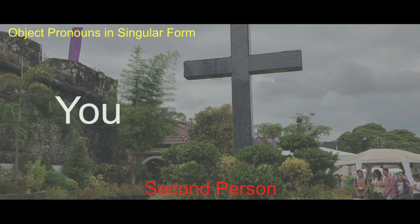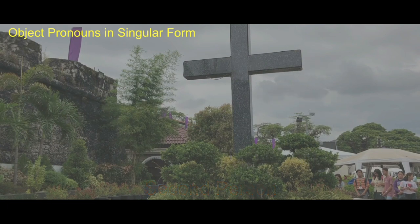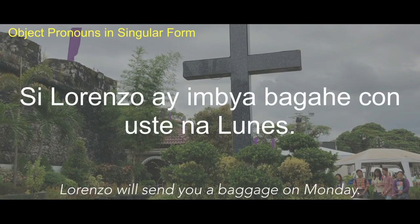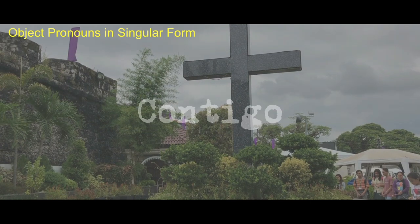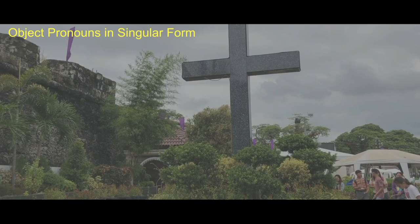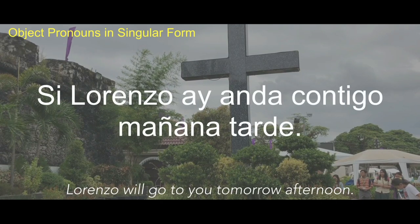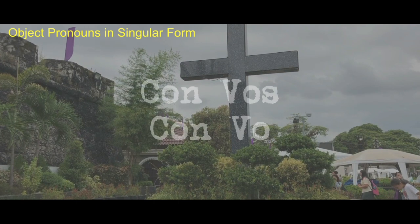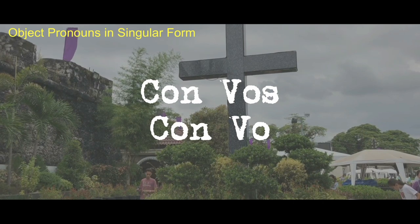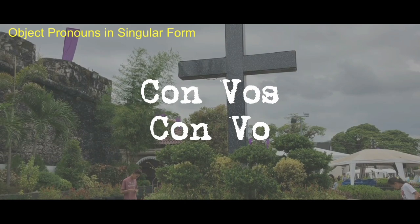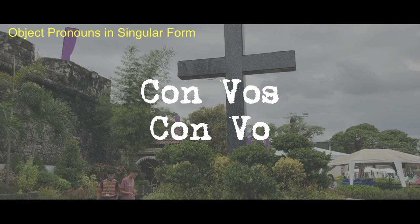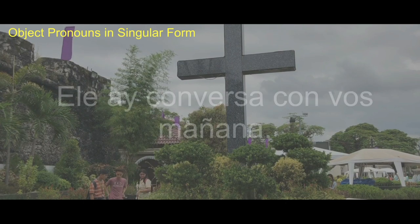The second person pronoun 'you' has several variations in object case. The first is Conuste, used to refer to someone who is older. Example: 'Si Lorenzo ay imbiabagahe con uste na lunes.' The next is Contigo, which refers to someone you know and can also be used for someone older. Example: 'Si Lorenzo ay anda contigo manana tarde.' The third and fourth variations, Convos and Convo, are used to refer to someone very close to you or people of the same age. When used to someone older, the speaker is considered rude. Angry persons tend to use this regardless. Example: 'Ela ay conversa con vos manana.'